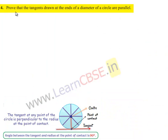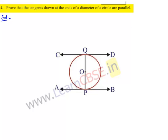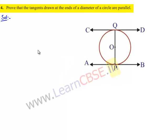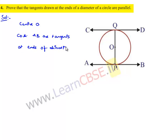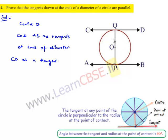Moving on to the fourth question: prove that tangents drawn at the ends of a diameter of a circle are parallel. Let us consider a circle with center O where CD and AB are tangents at the ends of the diameter. If we consider CD as a tangent, we know that a tangent makes a 90° angle with the radius at the point of contact.